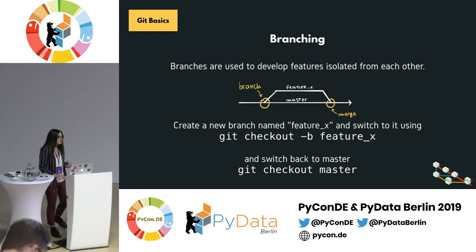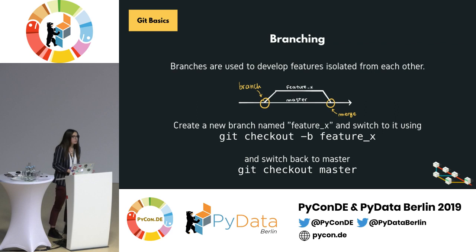Branches are essentially a unique set of code changes with a unique name, and are used to develop features isolated from each other. To create a new branch called feature-x, you can run git checkout -b feature-x. Do all your work and then go back to master with git checkout master. Master is the default branch for Git.